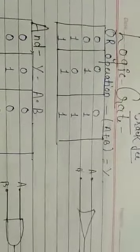The second one is the AND operation, which is Y equals A dot B. For this operation, if we input 0,0 we get 0; for 0,1 we get 0; for 1,0 we get 0; and for 1,1 we get 1.